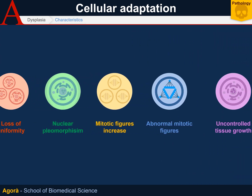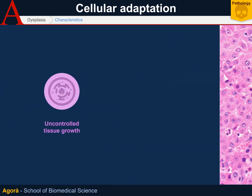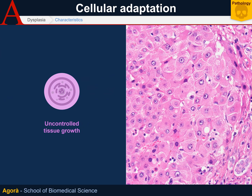Moreover, uncontrolled tissue growth that doesn't have a differentiation order takes place. Looking at the epithelium, we would normally see a basal layer of immature cells and a top layer of differentiated cells. But in dysplasia, this division does not exist. Undifferentiated cells may go up in the epithelium and find themselves in different layers, while differentiation may take place anywhere downwards.